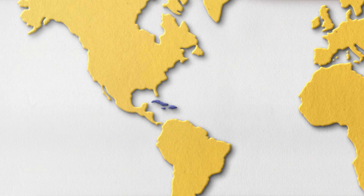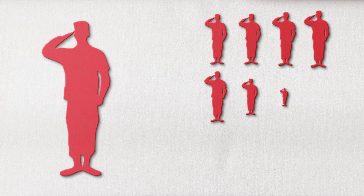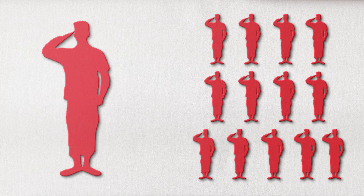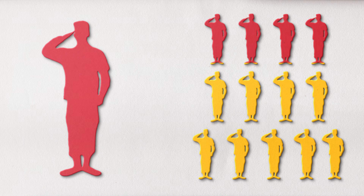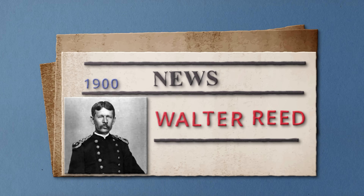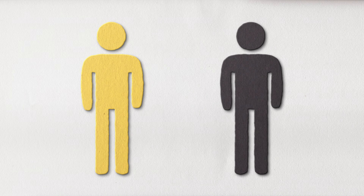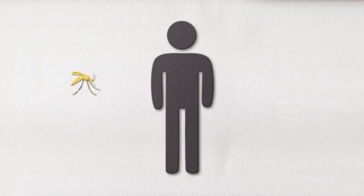The virus originated in Africa, but by the 1700s had reached Europe and parts of North and South America. At the end of the 19th century, when the United States invaded Cuba during its war with Spain, it was estimated that for every soldier who died in battle, 13 died from yellow fever. In 1900, army physician Walter Reed was tasked with investigating the cause of yellow fever. Through experiments, he discovered that the virus wasn't transmitted from person to person, but rather through mosquitoes.